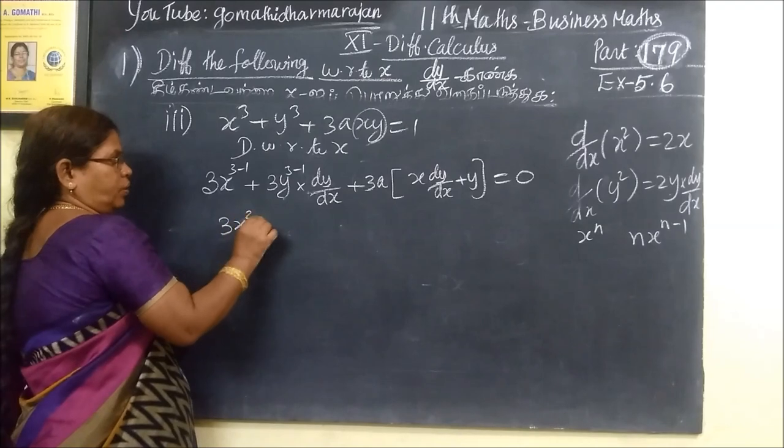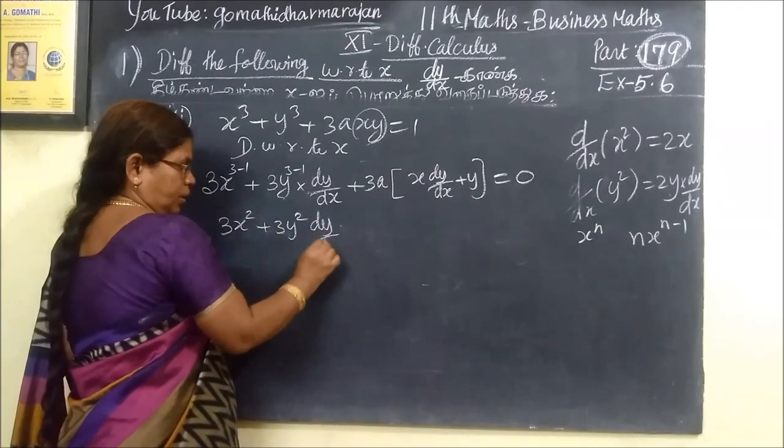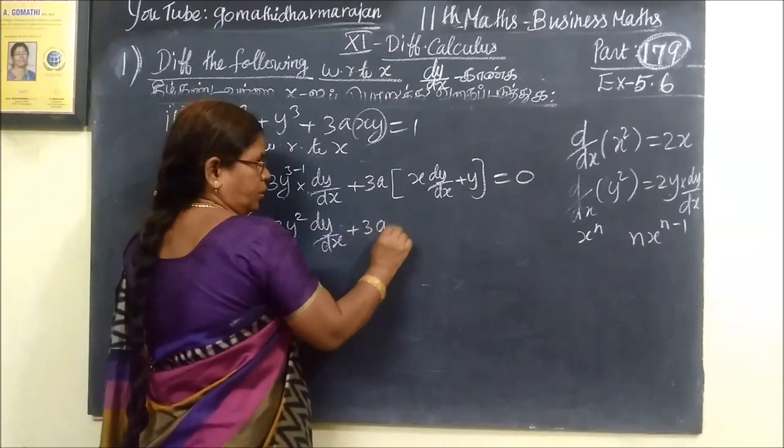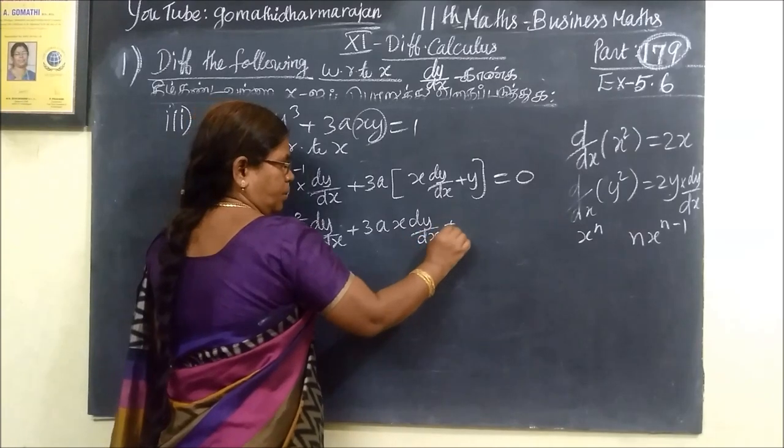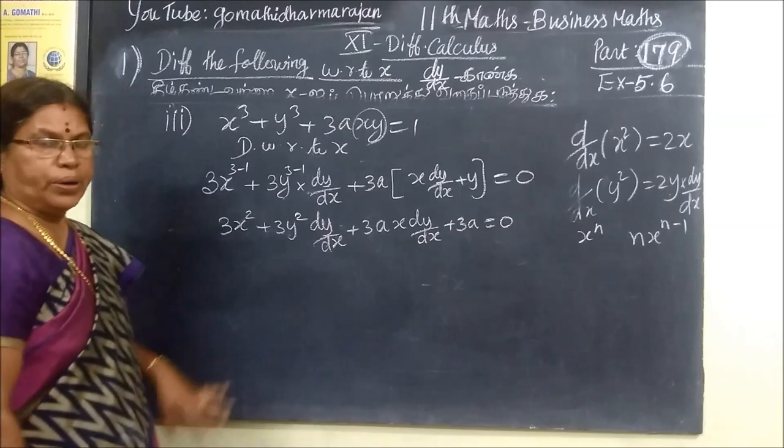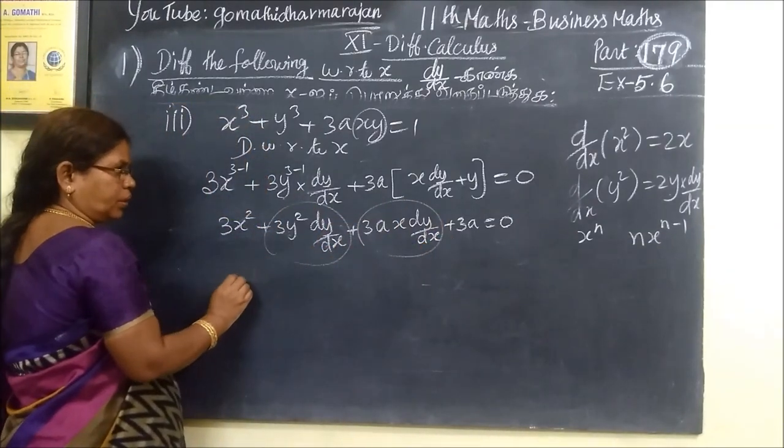3a is constant. xy gets 1 times x into dy/dx plus y times 1 is 0. Now we find dy/dx.